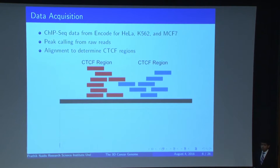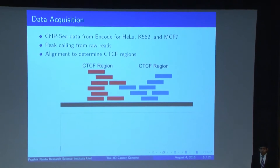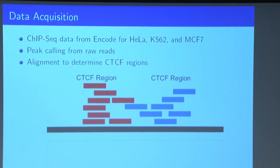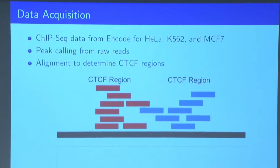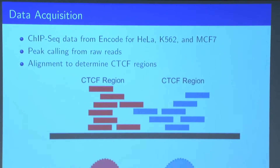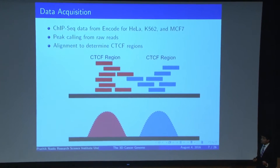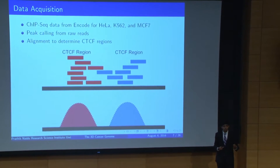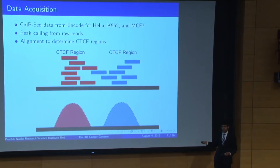We begin with data acquisition, and our one-dimensional data source is ChIP-seq data. ChIP-seq is a data source that references the extent to which certain proteins bind to different regions of the DNA. The goal of this step was to identify unique CTCF regions that could potentially form loops across our genome. The raw ChIP-seq data involved DNA sequences that binded to the genome, and we did peak calling on this in order to identify these unique regions of CTCF. We did this for three cell lines: HeLa, which is cervical cancer; K562, which is leukemia; and MCF7, which is breast cancer.